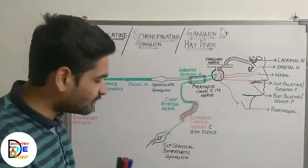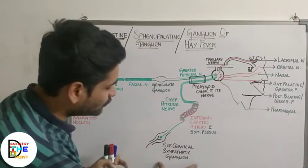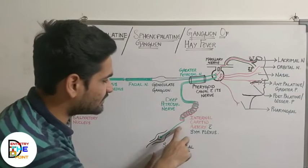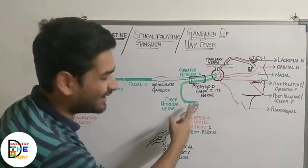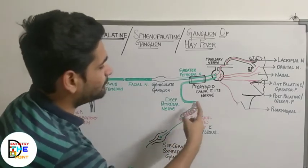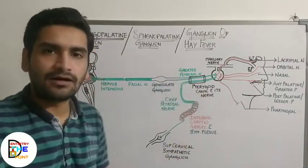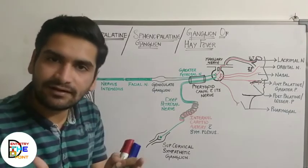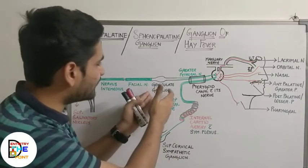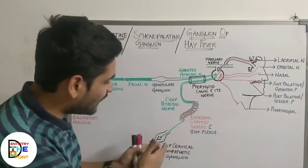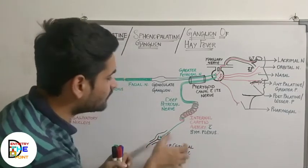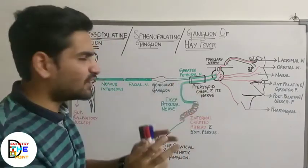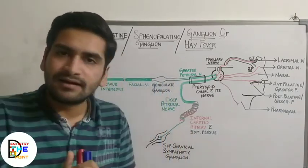The postganglionic fibers of the sympathetic supply start from the superior cervical sympathetic ganglion. From there, they reach the internal carotid artery, forming a plexus around it. After forming the plexus around the internal carotid artery, it continues as the deep petrosal nerve. So now we have two nerves: the greater petrosal nerve from the parasympathetic pathway, and the deep petrosal nerve from the sympathetic pathway.